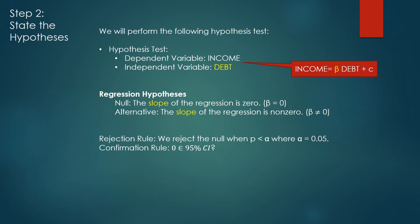We also know the rejection rule. When P is less than alpha, we reject the null hypothesis. And for most cases, alpha is 0.05. Also, we're going to check the confirmation rule to see whether 0 is in the 95% confidence interval.